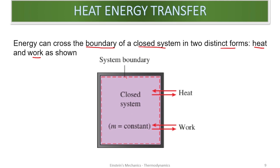This diagram shows a closed system. A system is anything under study, and the system boundary separates the system from its surroundings. For a closed system, mass is constant — it does not change with time because there is no space for mass to go out. However, the amount of energy inside this closed system can change.